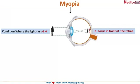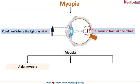Myopia is the condition where the rays are focused in front of the retina, which causes a blurring of the image because it is not falling exactly on the retina. Myopia is divided based on the causes into axial myopia, curvature myopia, or index myopia. We will learn each of them in detail.